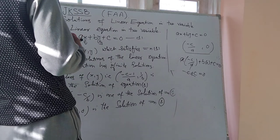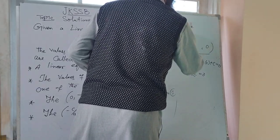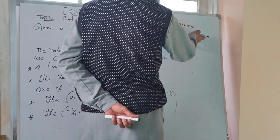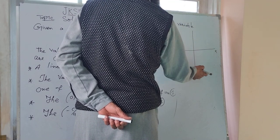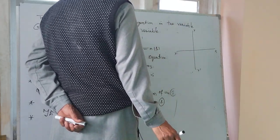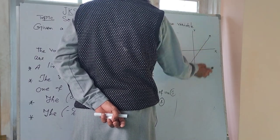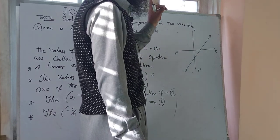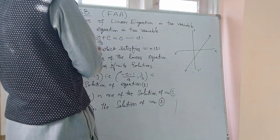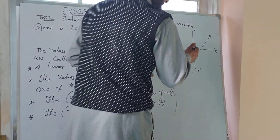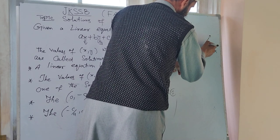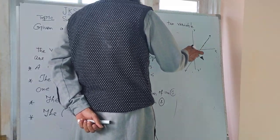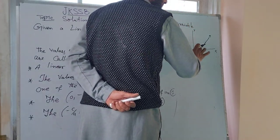We can also see the solution of the linear equation in graphical form. The graphical representation of a linear equation in two variables is a straight line in the plane. This is the X-axis of the plane and this is the Y-axis. The arbitrary line represents a particular linear equation in two variables. Any linear equation in two variables represents a line in a plane, and there are infinitely many points on that line which are the solutions of the linear equation.